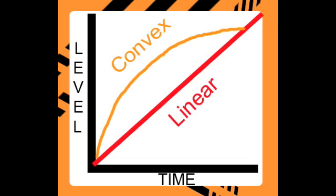An important note to programming Moog sounds is that the Virus envelope attack is linear, while the Minimoog has a slightly convex attack and short plateau. The decays are also different. Thanks to the Virus's programming capabilities, you can create the same envelope using recursive modulation.